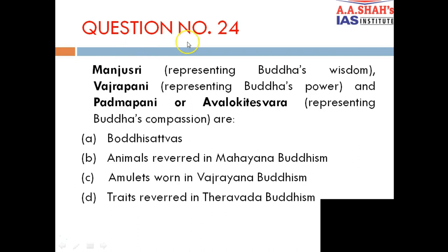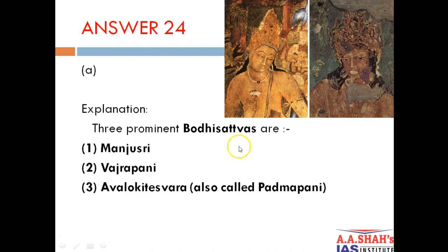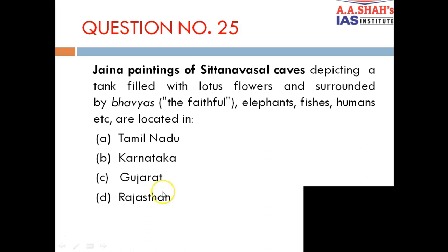Question 24: Manjushri representing Buddha's wisdom, Vajrapani representing Buddha's power, and Padmapani or Avalokiteshvara representing Buddha's compassion — are: A. Bodhisattvas. The correct answer is A — Bodhisattvas. These are three prominent Bodhisattvas. The Ajanta paintings of Padmapani and Vajrapani are shown here as examples.